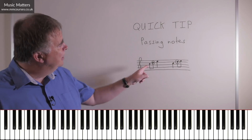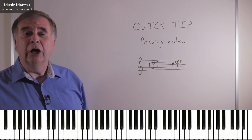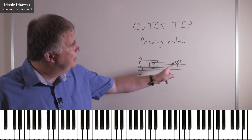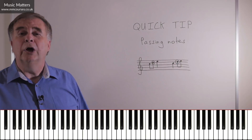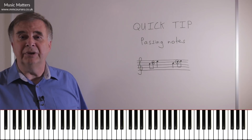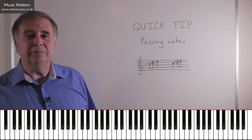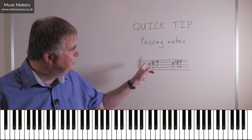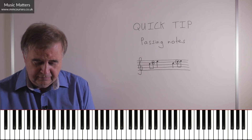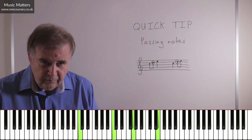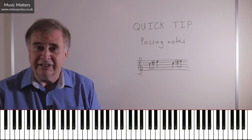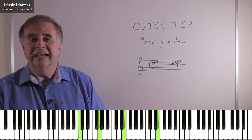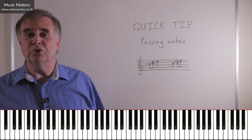Now, if it comes between beats like this one does, we call it an unaccented passing note. And if it comes on the beat, like this one does, we call it an accented passing note. An accented passing note is going to be stronger than an unaccented passing note. So here's the unaccented passing note. And here's the accented passing note. So you can hear how that accented passing note is a bit stronger.